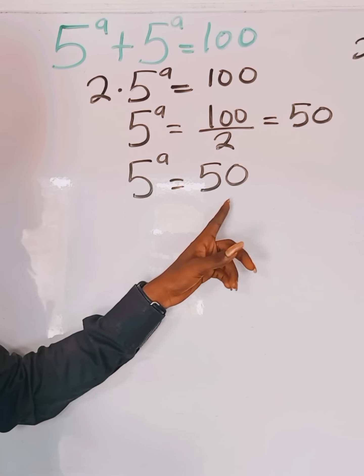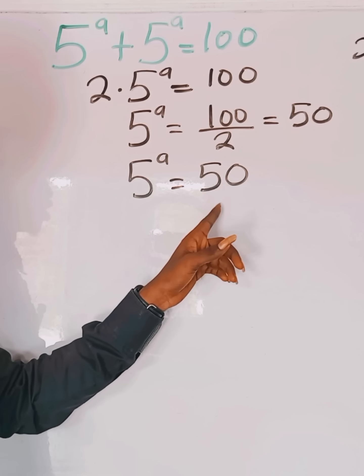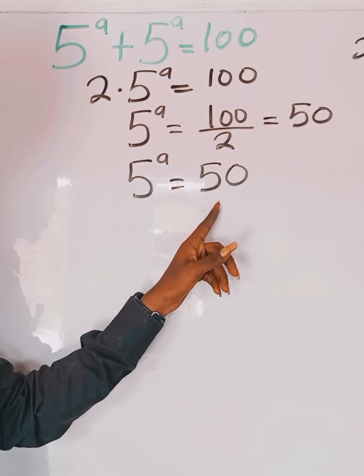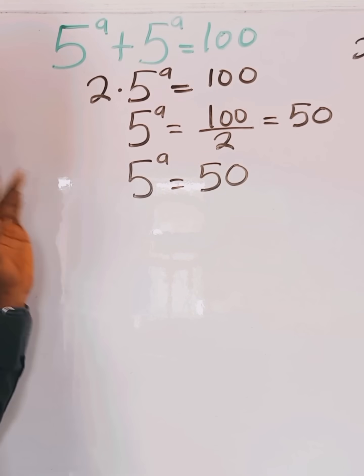Now, because 50 is not a power of 5, there's no way we can express 50 as a power of 5. It has to be decimal. So there's no trick we can use here other than logarithms. So we have to take log base 5 of both sides.